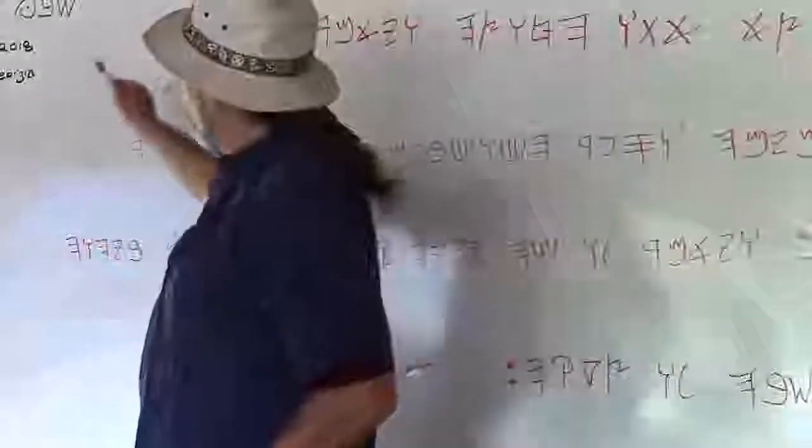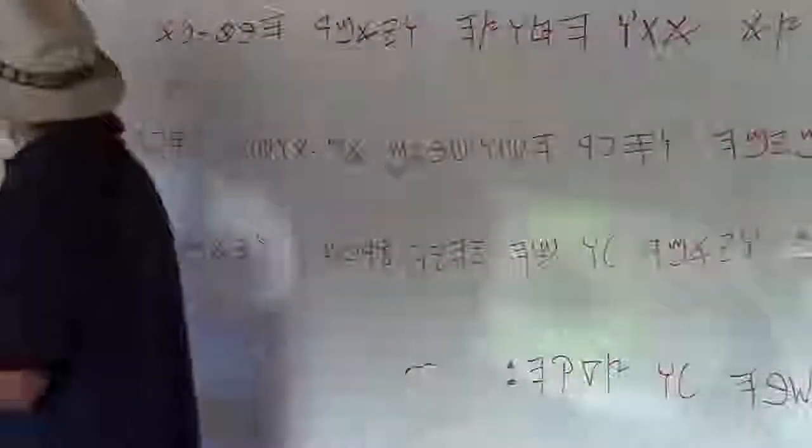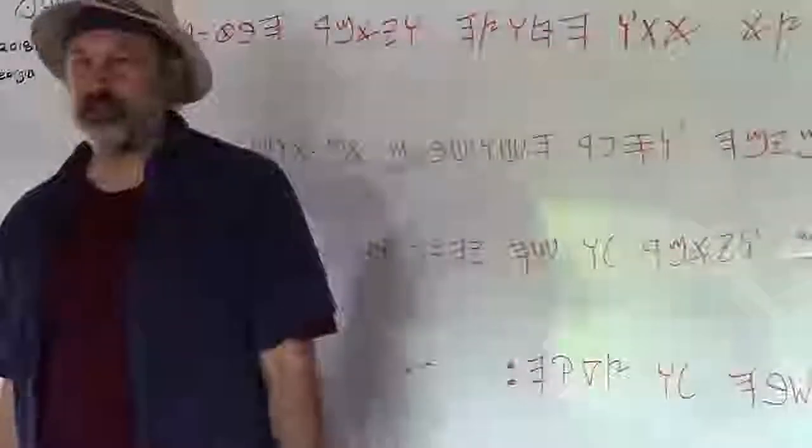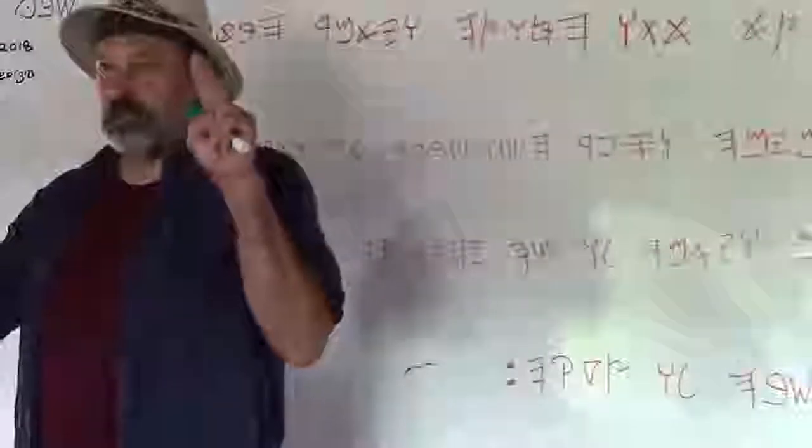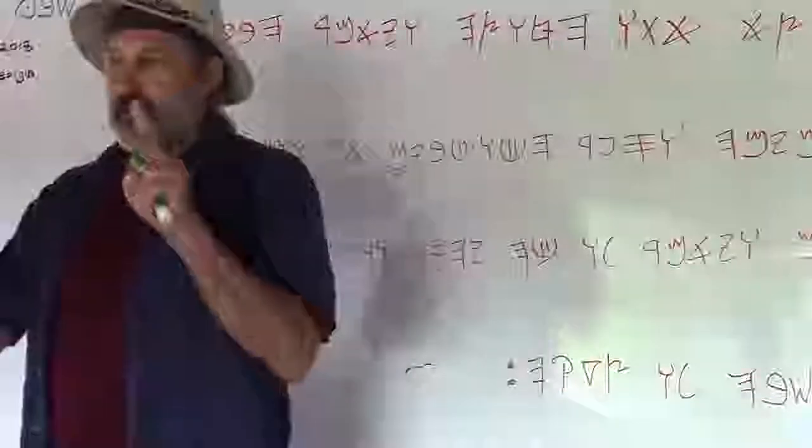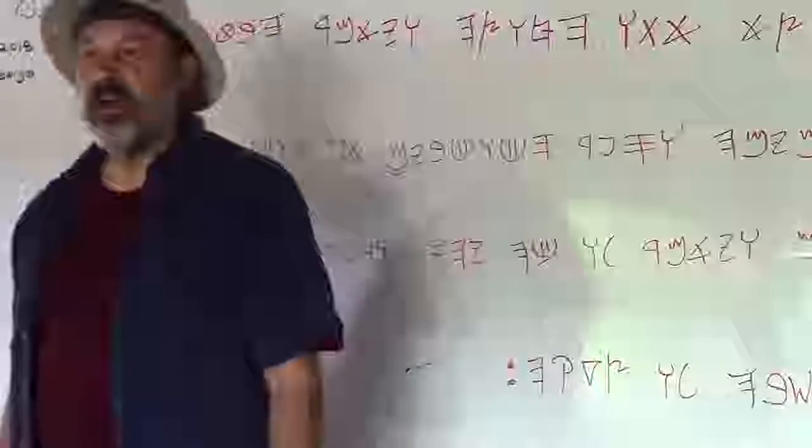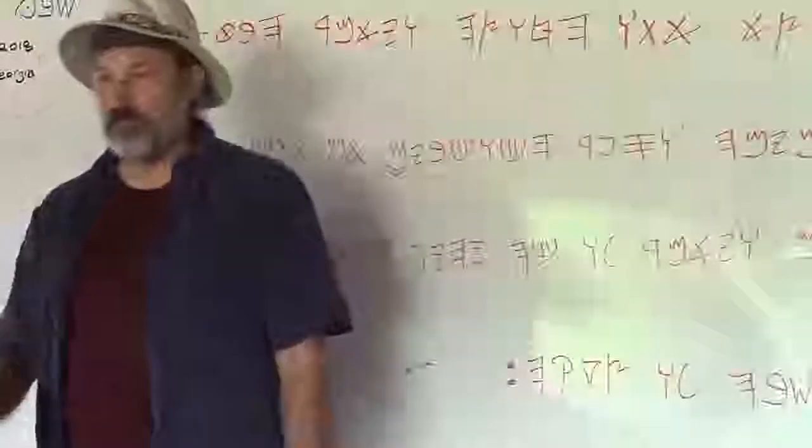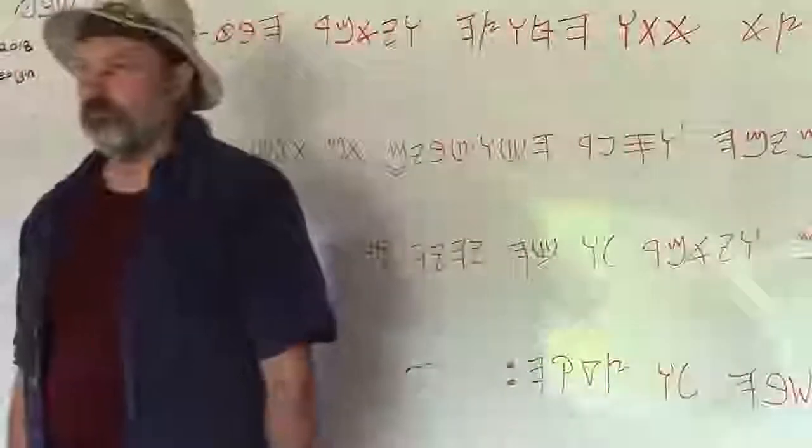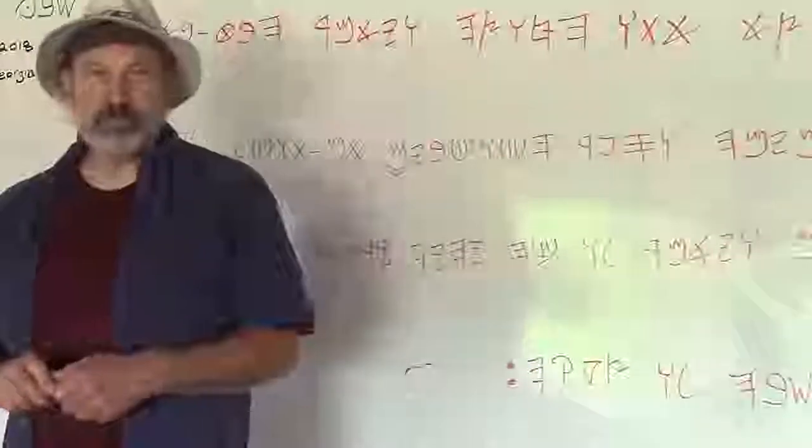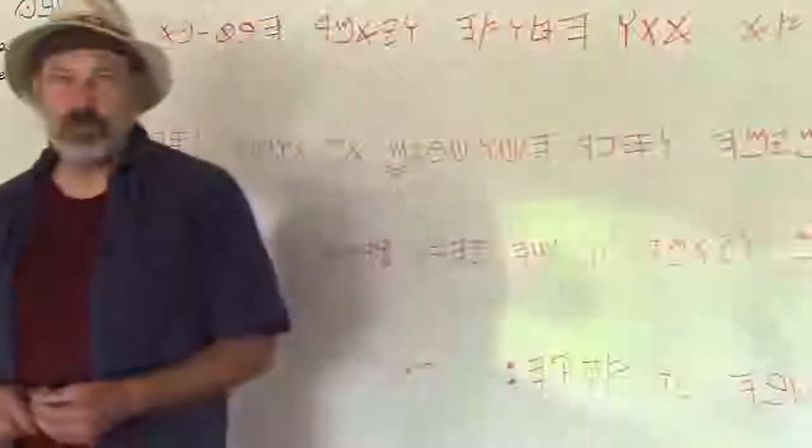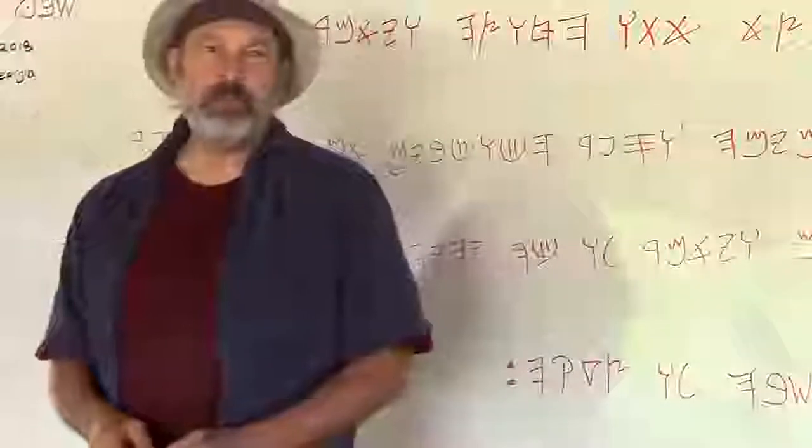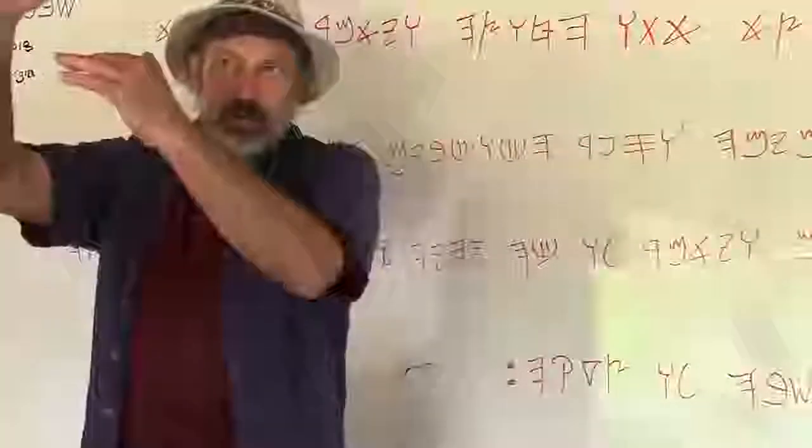The Hebrew word for seven is spelled shin bet ayin. Does anybody know why, besides the people who really know, I'm going to open it up to everybody else, does anybody know why they say that seven is the perfect number, or the number of God, or the heavenly number?